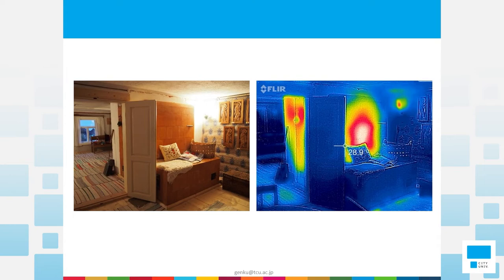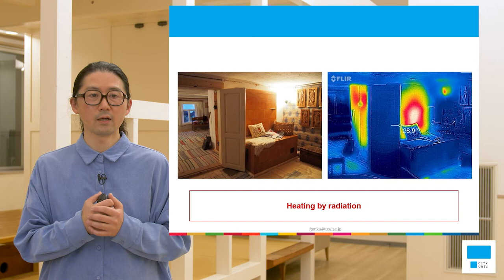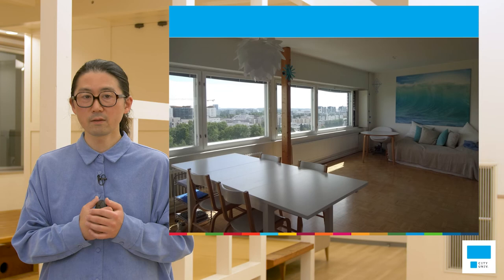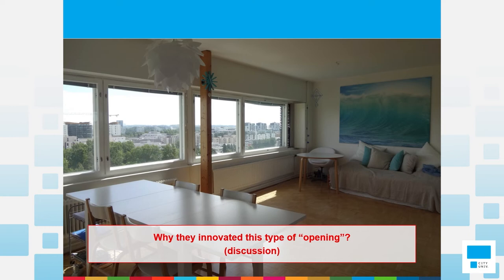That is why they chose to heat by radiation. In cold climate regions, they need to keep heat efficiently and minimize heat losses from the windows. Currently, these are very typical apartment houses in Finland, and you can see the radiators under the windows. I want to raise one discussion point: just like radiation panels, why did they innovate this type of opening — I mean windows? Please think about why they chose this type of windows and what the difference is compared with your windows.